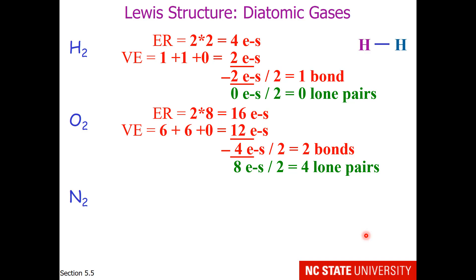If we were to draw oxygen, you would discover that it needs 2 bonds between each oxygen atom. So we'll have 2 bonds, and each oxygen has 2 lone pairs. Notice how each oxygen has access to 8 electrons.